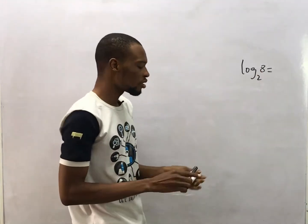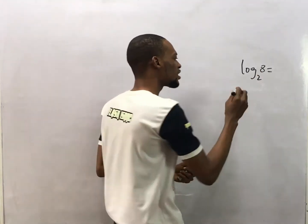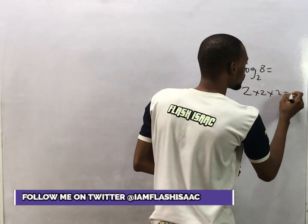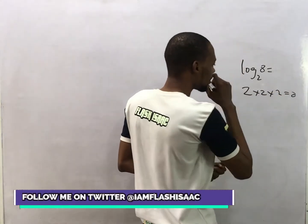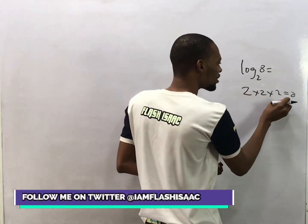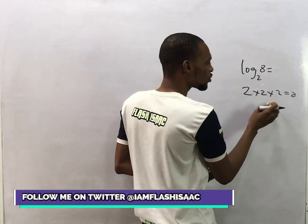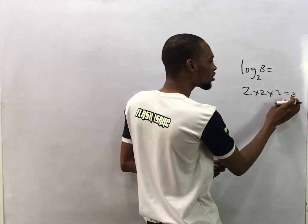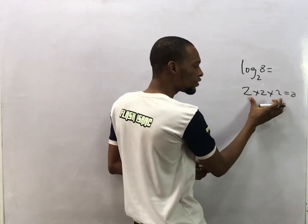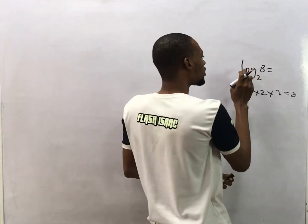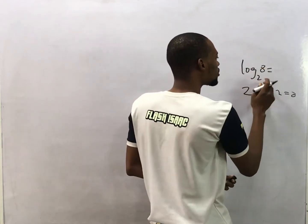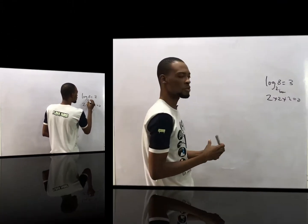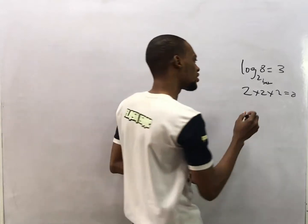When we say 2 times 2 times 2 equals 8, that means if we multiply 2 three times we get 8, or 8 contains three 2s. So this means log base 2 of 8 equals 3.